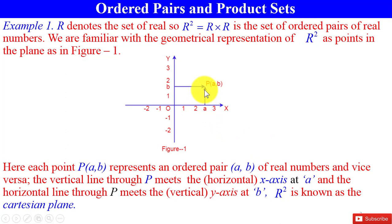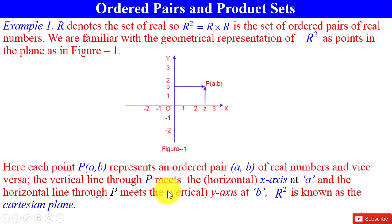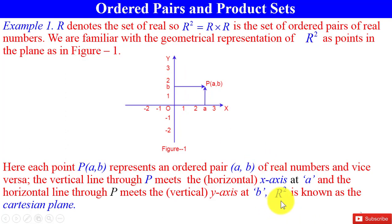The vertical line through the point P meets the X-axis at A. The horizontal line through P meets the vertical Y-axis at B. R² is known as the Cartesian plane.